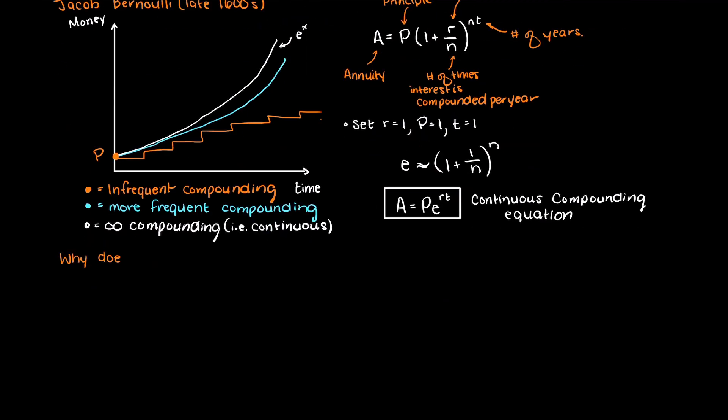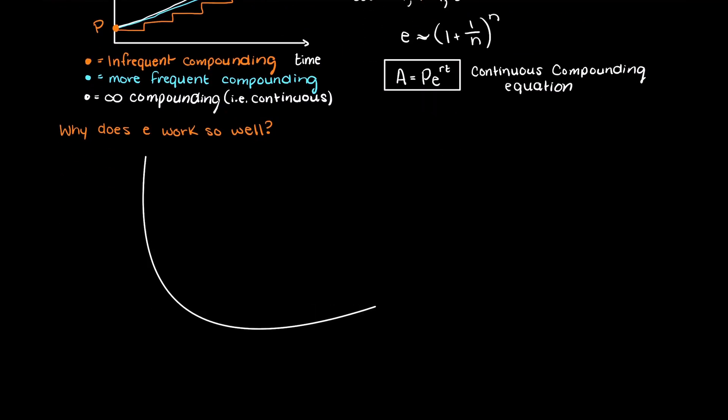But again, we should be asking why. Why is E, a random irrational number, the best base for our exponential function?